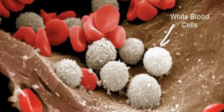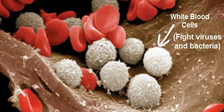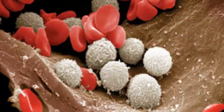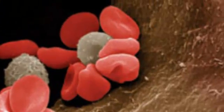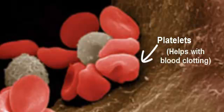White blood cells are the cells that fight infections. They destroy viruses, bacteria, and other foreign invaders or particles inside the body to keep us healthy. The oddly shaped cells — not as round as the others — are called cell fragments, specifically called platelets. The function of platelets is to help with blood clotting when we get a cut in our skin, to prevent blood from continuously leaving the body.